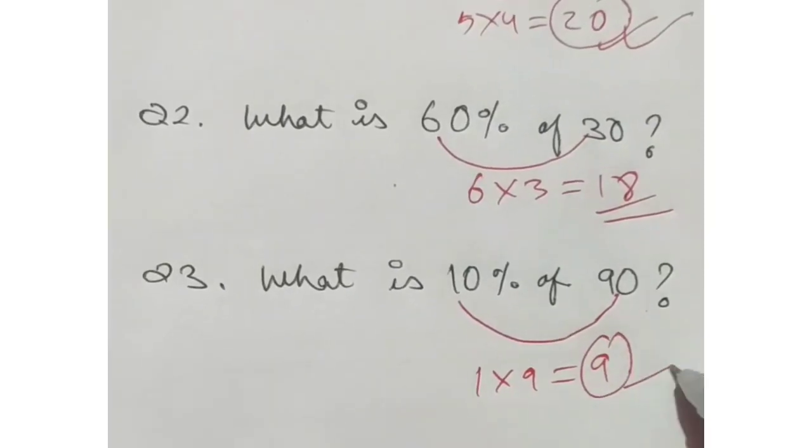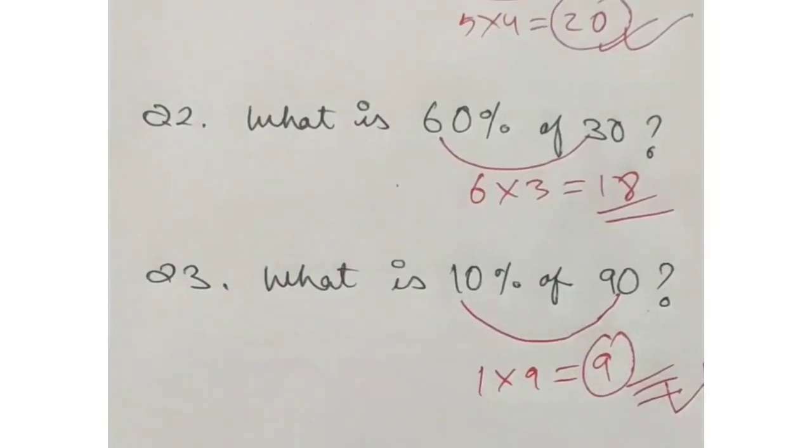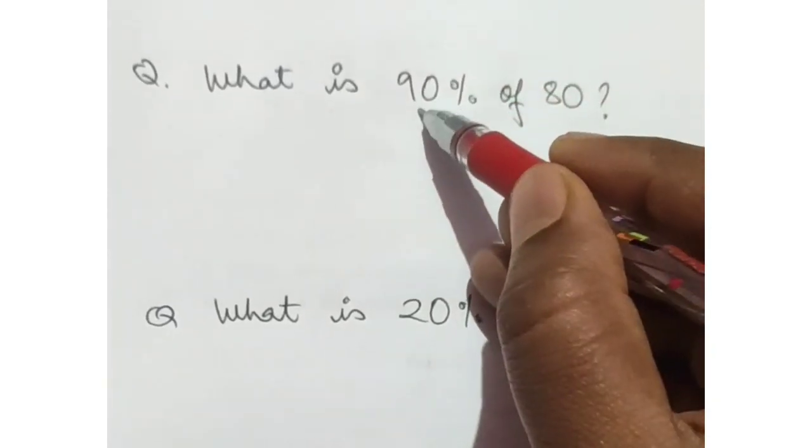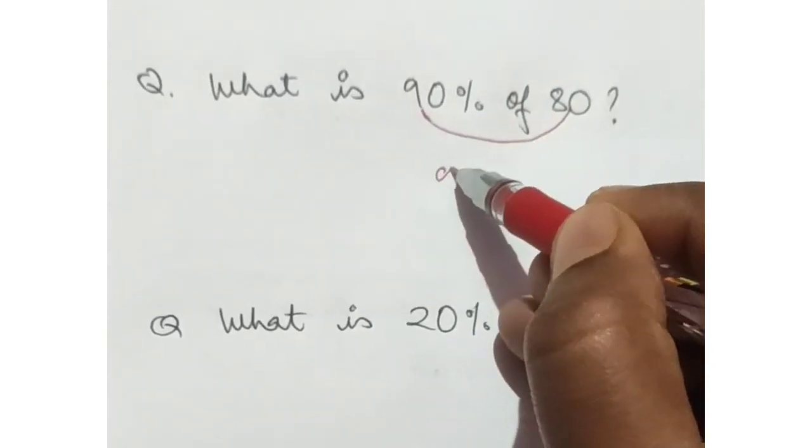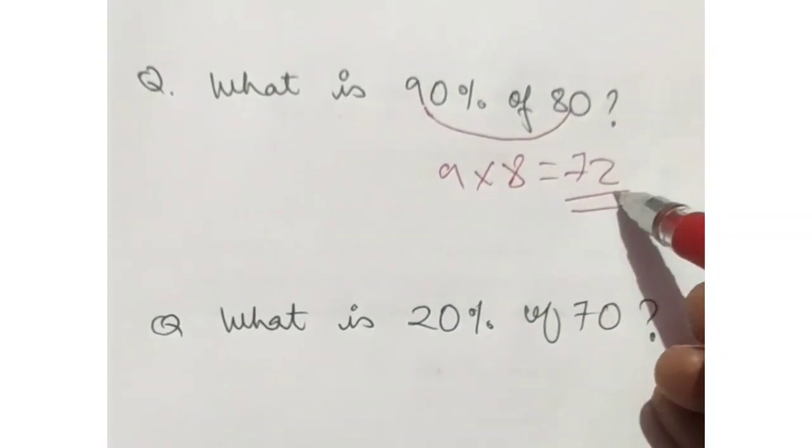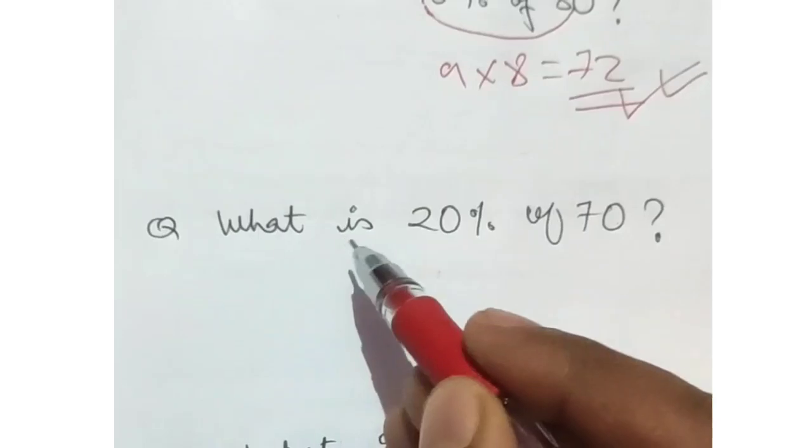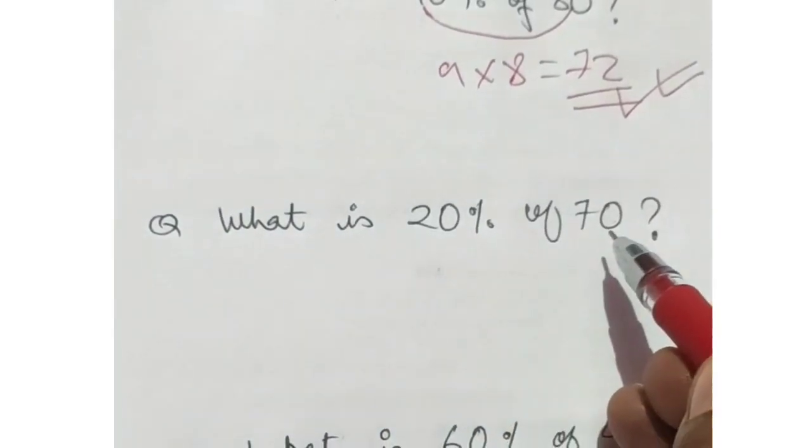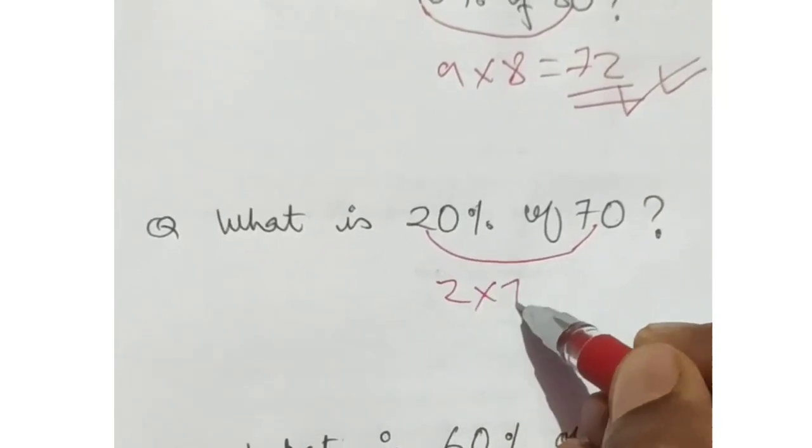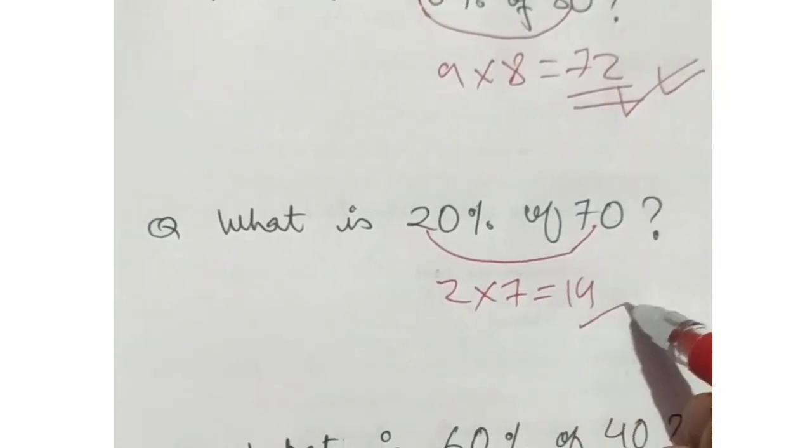1 times 90, 9, answer 9. What is 90% of 80? 9 times 80, 72, answer 72. What is 20% of 70? 2 times 70, 14, answer 14.